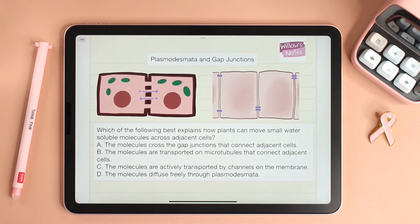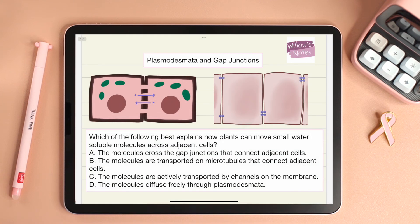Finally it's time for our question of the day. Which of the following best explains how plants can move small water-soluble molecules across adjacent cells? Pause the video, try to answer the question, and then hit play so that we can answer it together.